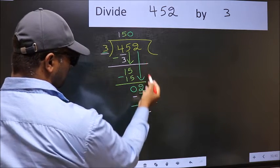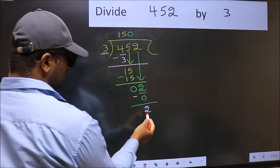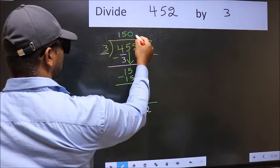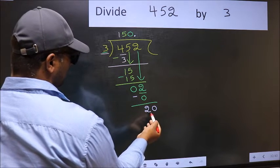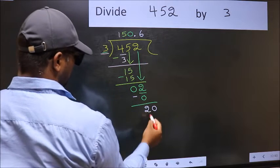Over here, we did not bring any number down. And 2 is smaller than 3. So now you can put a dot and take 0. So 20. Our number close to 20 in 3 table is 3 6s 18.